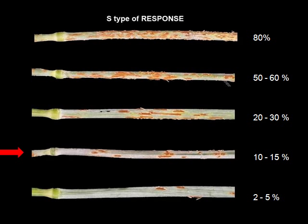The second one from the bottom we could describe as maybe 10 or 15S. The next one, 20 to 30S. The next, maybe 50 to 60S. And the top would be scored as 80S. We assume that the amount of disease is correlated with crop loss, and there is adequate experimental evidence to say that that relationship is generally true.